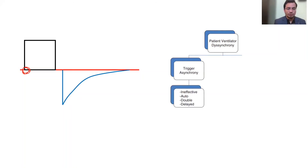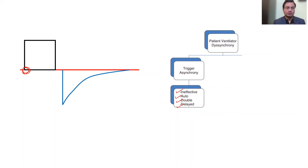Trigger asynchrony can be of four types: missed trigger — the patient cannot trigger despite their effort, also called ineffective trigger; auto trigger — the ventilator starts a breath without patient effort; double triggering — the patient wants one breath but the ventilator delivers two; and delayed triggering — the ventilator takes extra time to start the breath. These four types of dyssynchrony occur at the time of triggering and are the most common asynchronies.